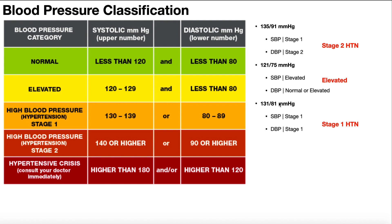Next example: 131 over 81. The systolic 131 is stage one hypertension. The diastolic 81 is also stage one hypertension. Both numbers are in the same category, so this is clearly stage one hypertension.